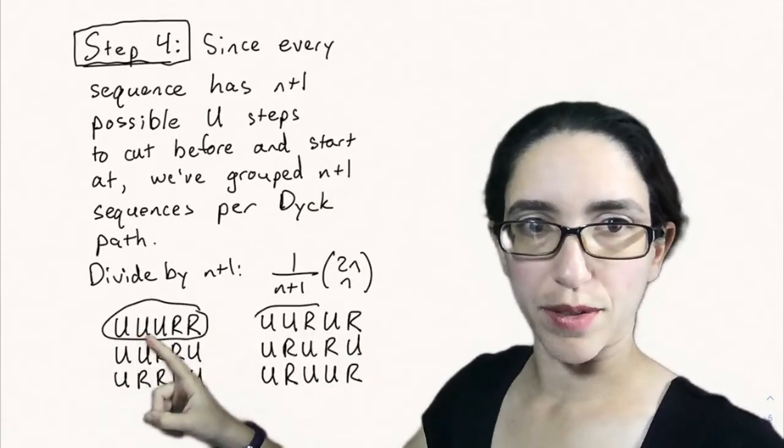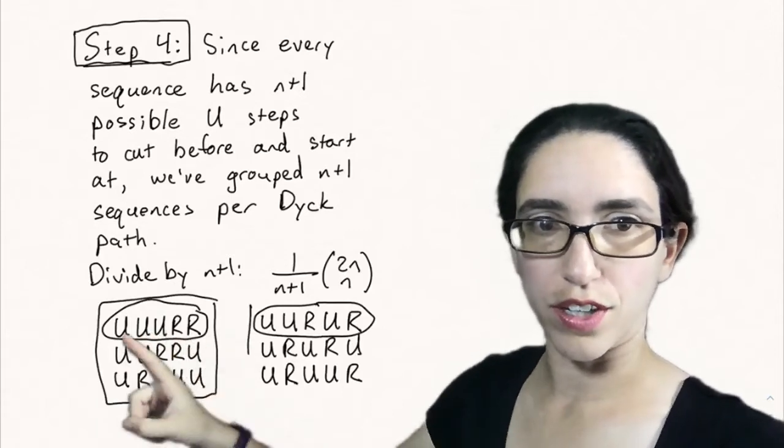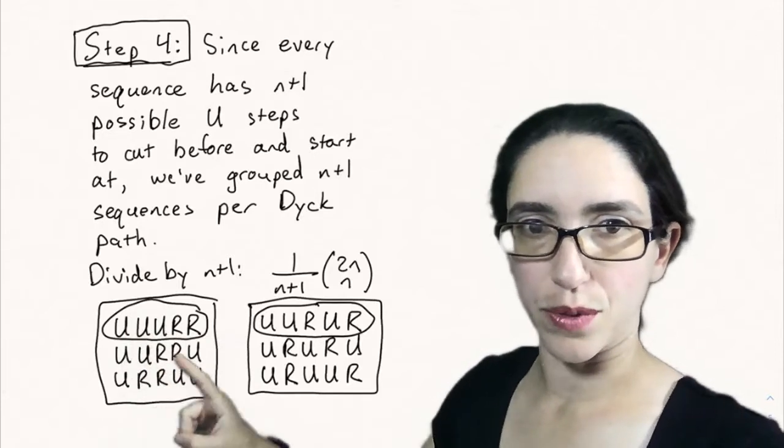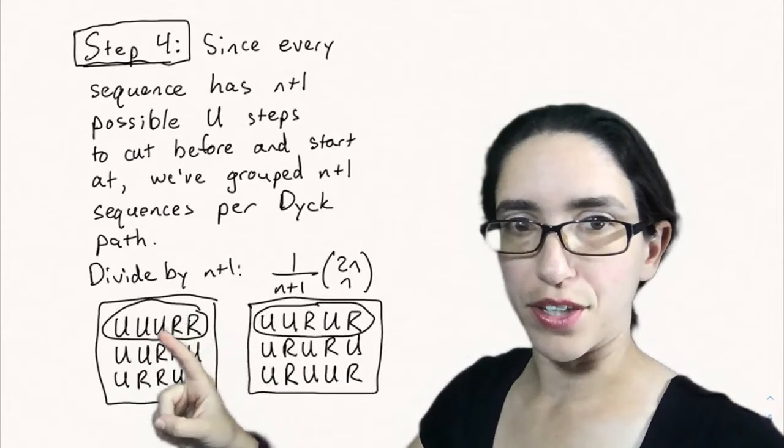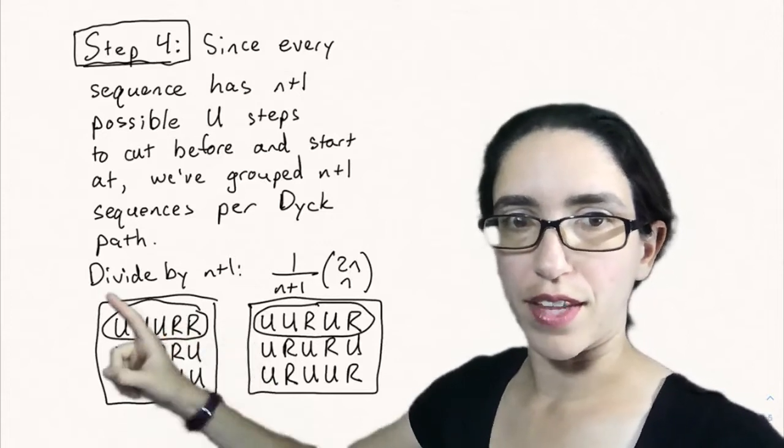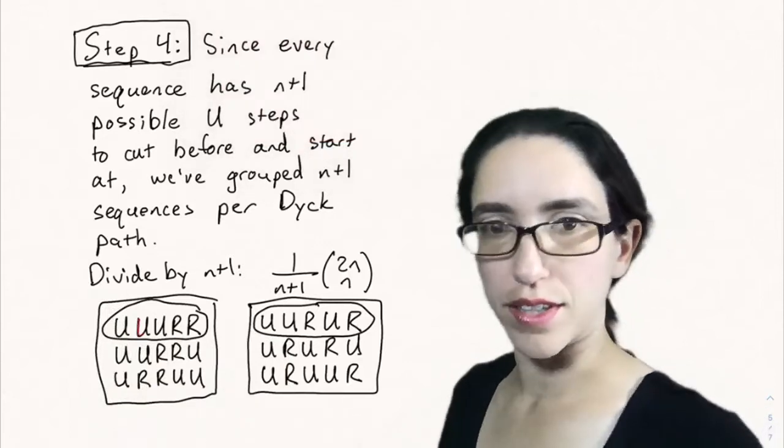Starting with this Dyck path, starting at this U, going U, U, R, R, U, that's this next sequence. And then similarly, starting at the third U: U, R, R, and then wrap around to the front, U, U, that's the third sequence in this group. I've illustrated here, this U corresponds to that U, and this third U really corresponds to that one.